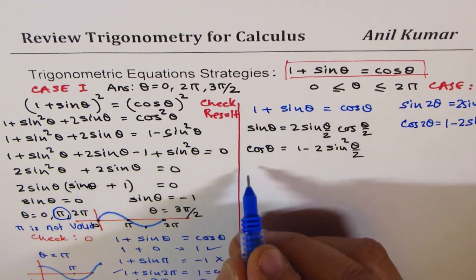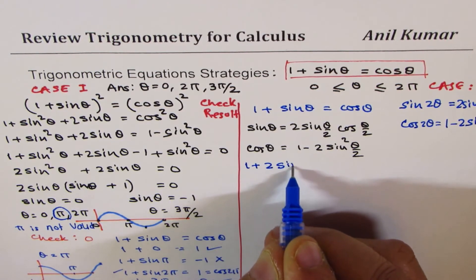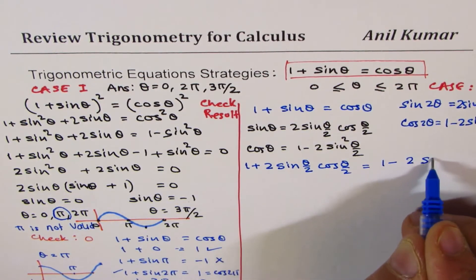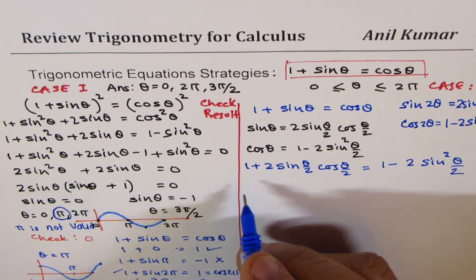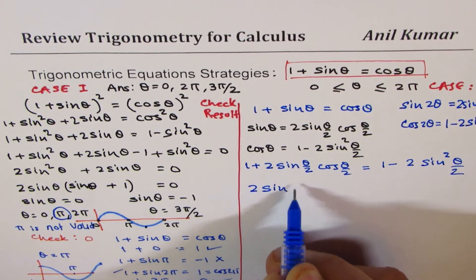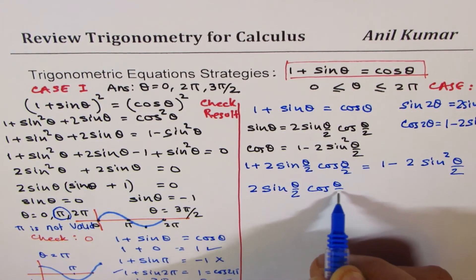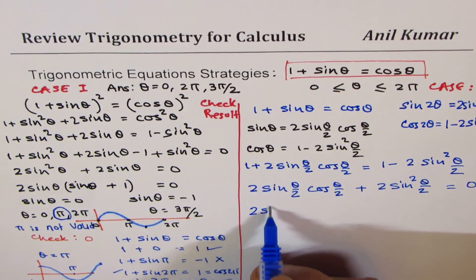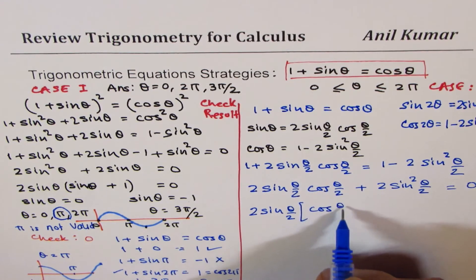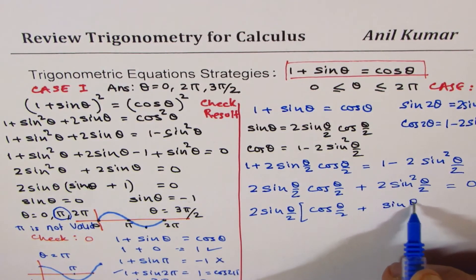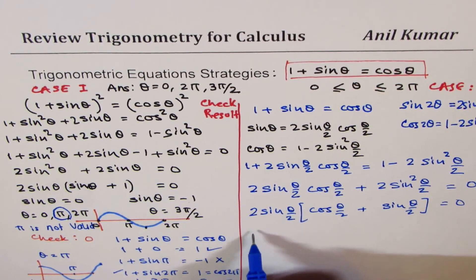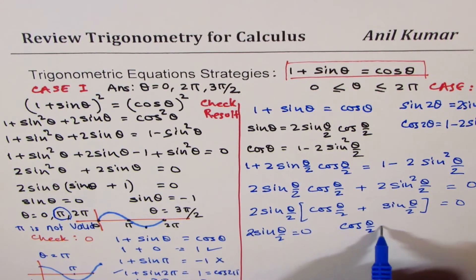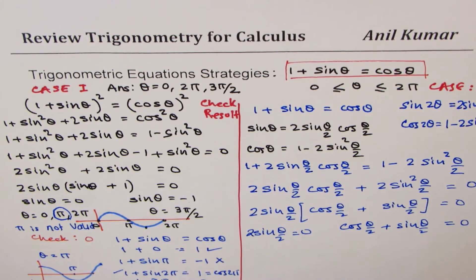Substituting, we get: 1 plus 2 sine(θ/2) cos(θ/2) equals 1 minus 2 sine squared(θ/2). Bringing terms together, the 1s cancel, giving: 2 sine(θ/2) cos(θ/2) plus 2 sine squared(θ/2) equals 0. Taking 2 sine(θ/2) as common, we get: 2 sine(θ/2) times [cos(θ/2) plus sine(θ/2)] equals 0. Either sine(θ/2) equals 0 or cos(θ/2) plus sine(θ/2) equals 0.